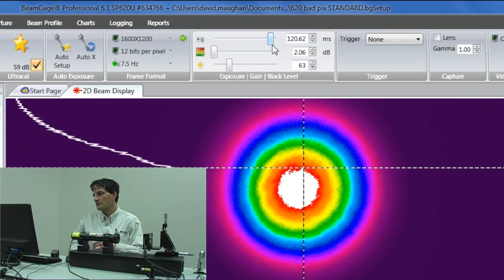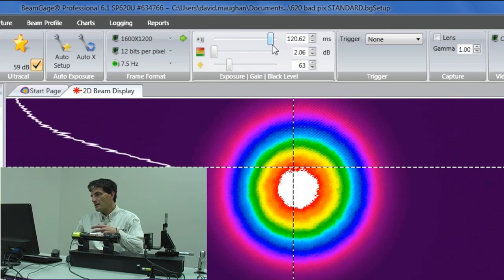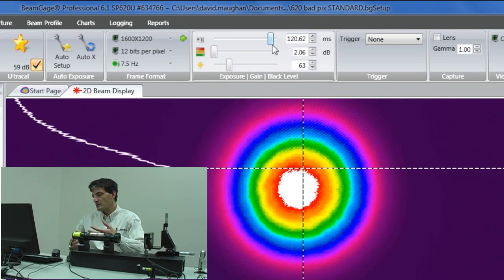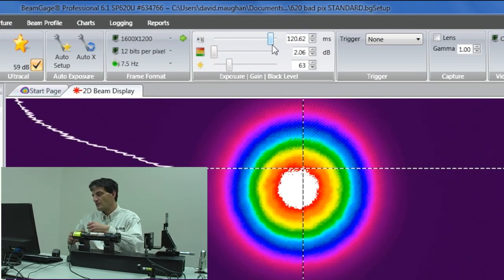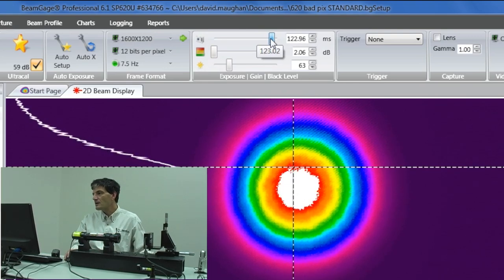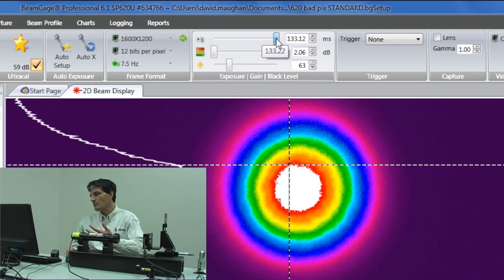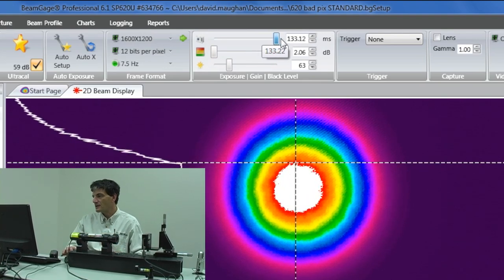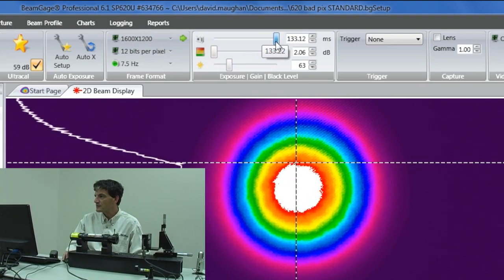The way this setting works is the camera, as charge builds up in each little pixel on the camera due to the light striking it, we wait a certain amount of time before we pull that charge off the camera. If I wait longer, what happens is more and more charge builds up and eventually I saturate the pixel array.